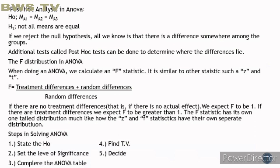The F distribution in ANOVA. When doing an ANOVA, we calculate an F statistic, which is similar to other statistics such as Z and T. F equals treatment differences plus random differences divided by random differences. If there are no treatment differences — that is, if there is no actual effect — we expect F to be 1. The F statistic has its own one-tailed distribution, much like how the Z and T statistics have their own separate distributions.